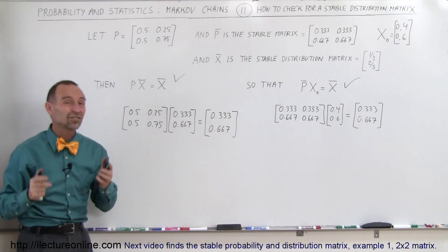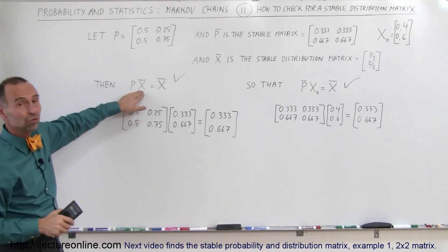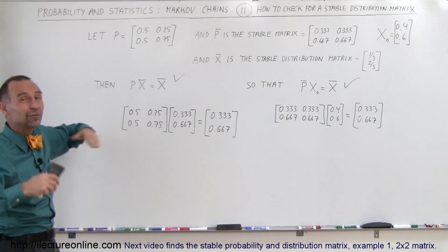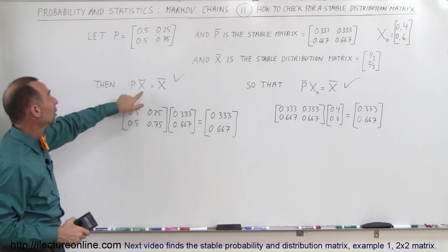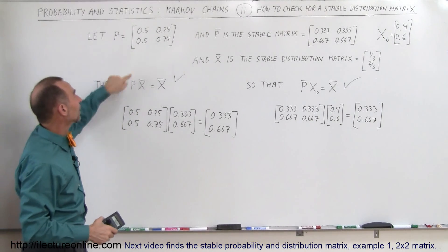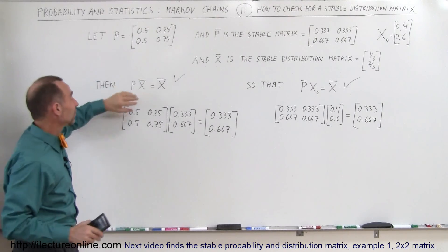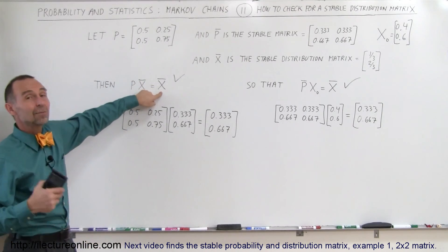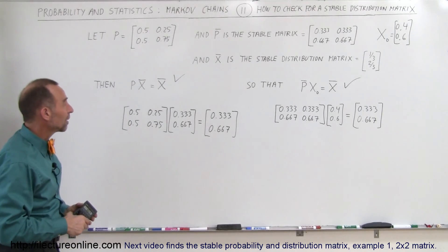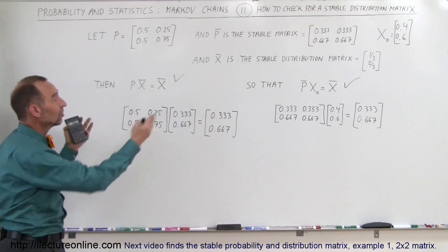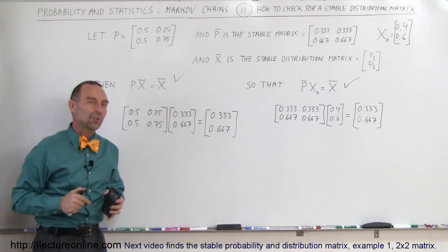So that is how we check a stable distribution matrix. If we have a stable distribution matrix and want to verify it, we multiply it times the probability matrix, and we should get the same stable distribution matrix back. As you can see, it works — and that's how we check it.